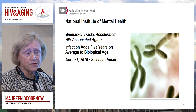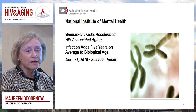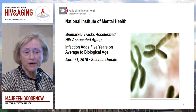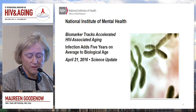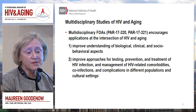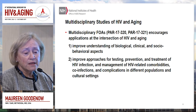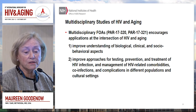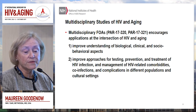The National Institute of Mental Health is definitely a leader in the latency area, looking at the interaction between HIV and cells of the central nervous system, including interactions with cells of the innate system — macrophages, monocytes, and other innate immune cells. There are also a number of multidisciplinary studies of HIV and aging that encourage research at the intersection between HIV and aging to improve understanding of biological, clinical, and social behavioral aspects, as well as patient-oriented approaches for testing, prevention, and treatment of infection.